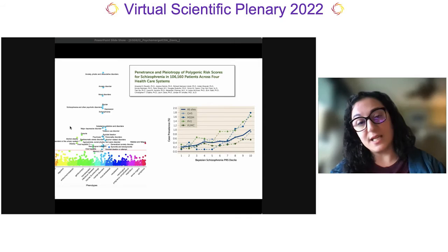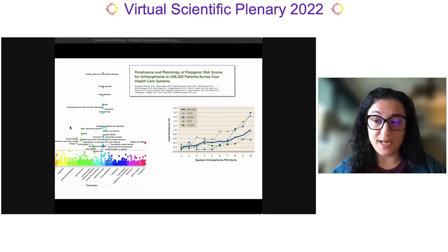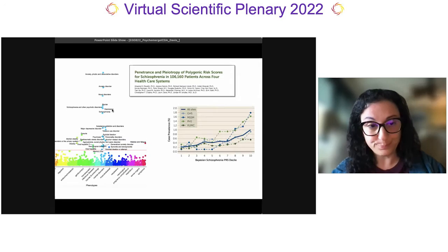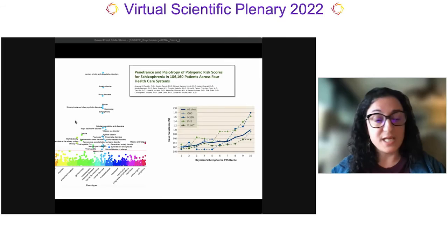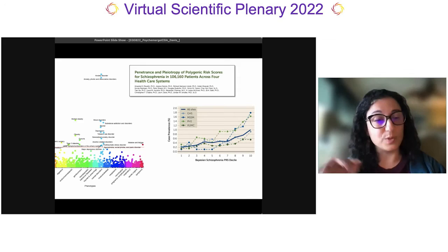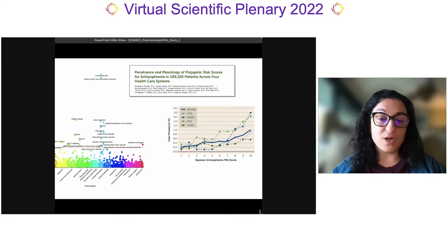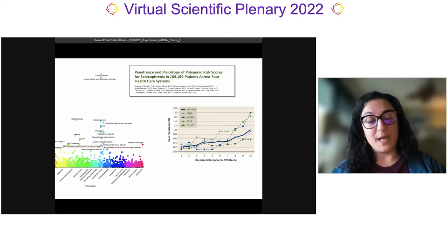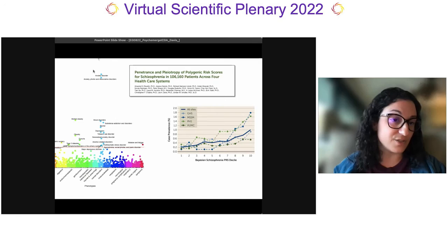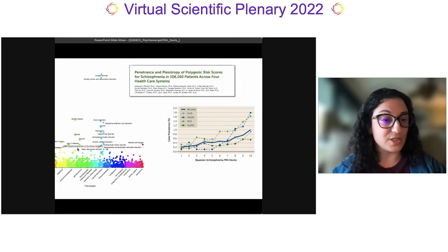A phenome-wide association study is sort of the inverse of a genome-wide association study — instead of comparing cases and controls for one phenotype at every position in the genome, here we take one single polygenic score and ask whether it is higher or lower on average for cases or controls across about 1,500 phenotypes. These studies are performed on everybody in the biobank regardless of whether they have schizophrenia, in a regression framework adjusting for age, sex, and principal components from genetic data. In this Manhattan plot, each dot represents a phenotype organized by domain on the x-axis, with the y-axis reflecting the negative log10 of the p-value.